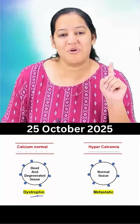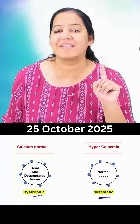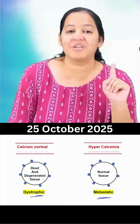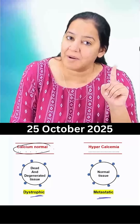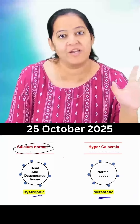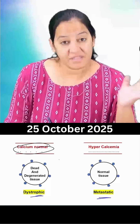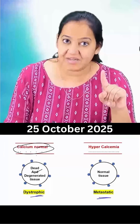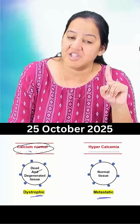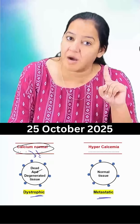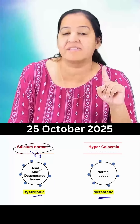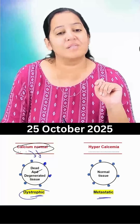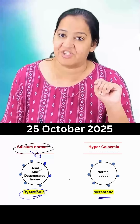It is of two types: dystrophic and metastatic. In dystrophic calcification, the calcium level in the blood is absolutely normal, but the tissue is dead and degenerated. So because the tissue is dead and degenerated, the calcium leaves the blood, comes out of the blood vessel and gets deposited over the tissue. This is known as dystrophic calcification.